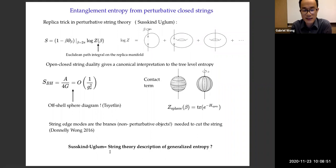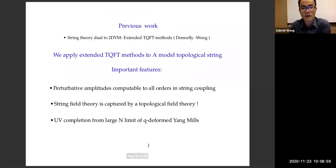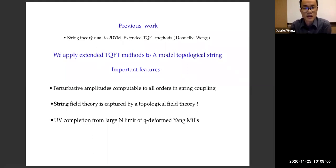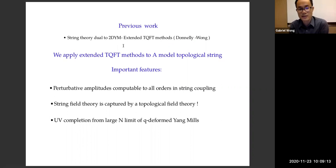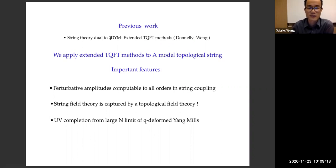It would be interesting if we could realize the Susskind-Ogburn idea in ADS — perhaps it would give us a string theory description of generalized entropy. In some previous work, Will Donnelly and I considered the string theory dual to two-dimensional triangles. We applied extended TQFT methods to factorize the Hilbert space and compute the entanglement entropy, finding a realization of Susskind and Ogburn's ideas.